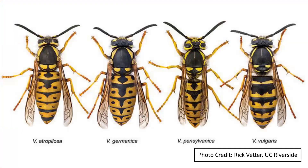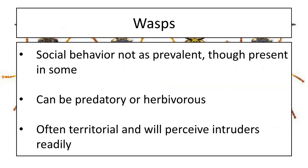What about the other members of Hymenoptera? Here's one we all kind of dread — this is a picture of several yellow jacket species, which belong to the group known as wasps. Wasps unfortunately we don't love a whole lot. They do have some social behavior among some species, though it's not nearly as prevalent as in bees and ants. Wasps can be predatory or herbivorous. For example, the cicada killer is a predatory wasp specifically targeting cicadas.